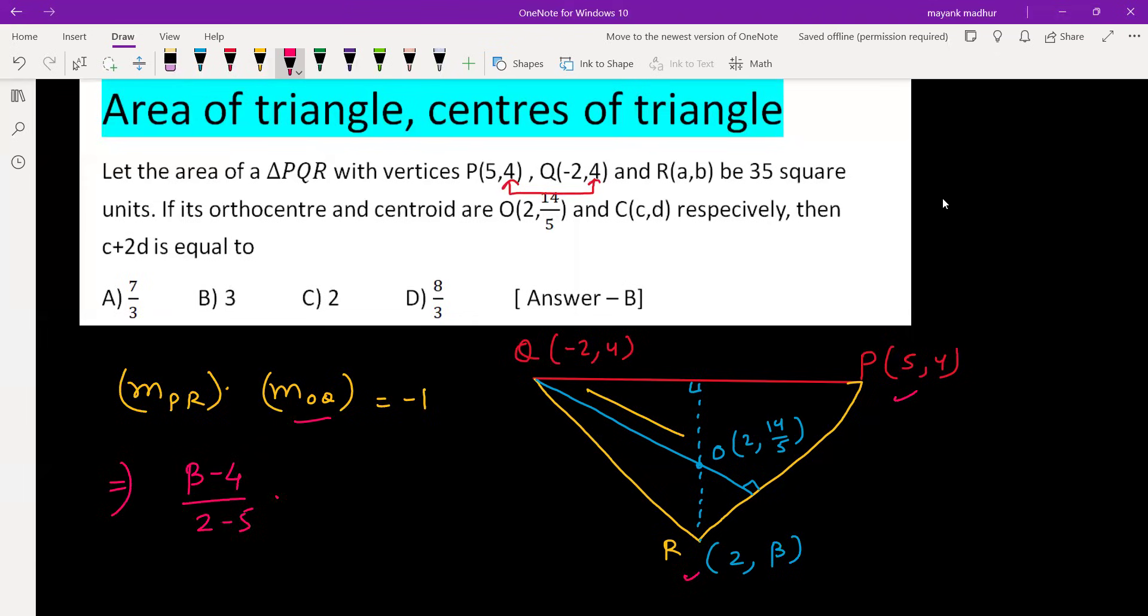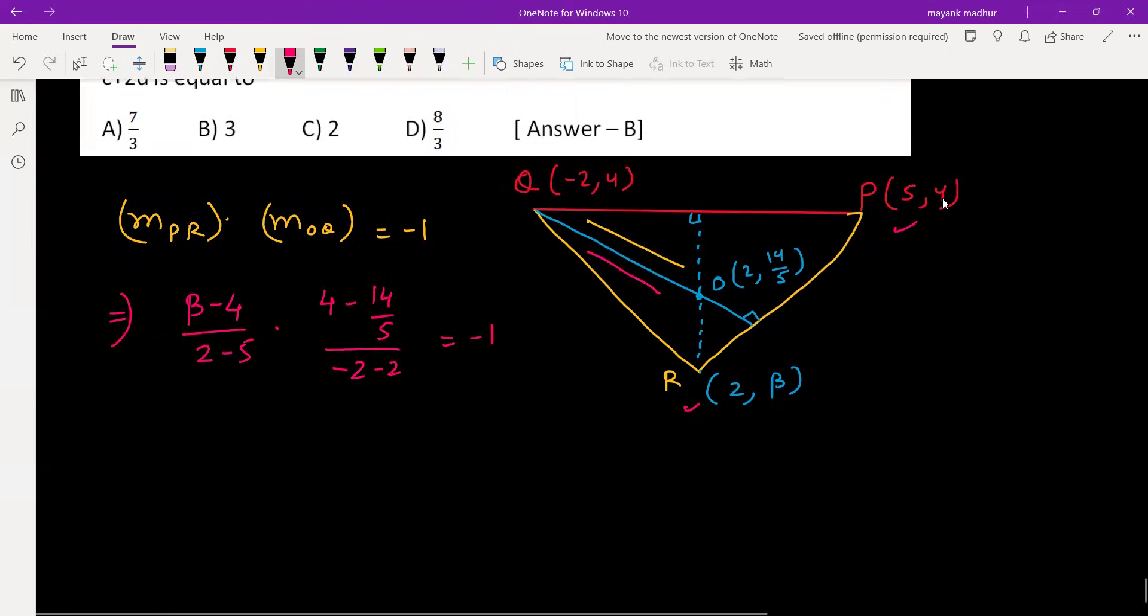Slope of OQ, using the same logic, with O and Q coordinates given: 4 minus 14 by 5 divided by negative 2 minus 2. This multiplication needs to be equated with negative one.